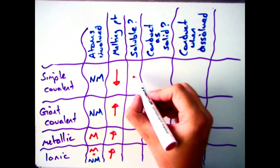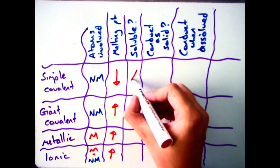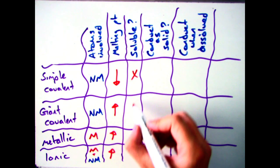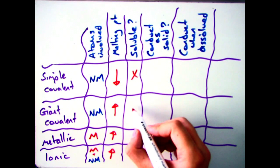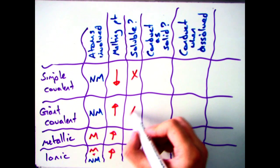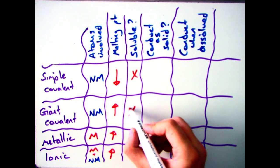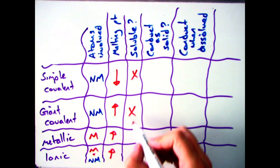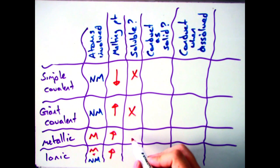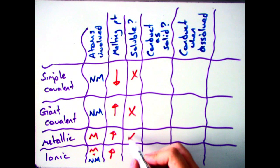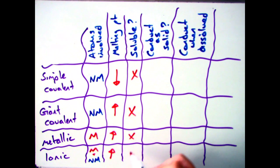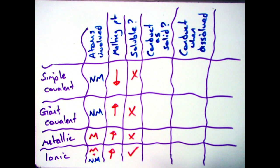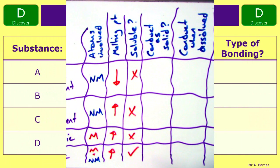If we focus on solubility, the key thing to remember is that most simple covalent compounds are insoluble, giant covalent and metallic are all insoluble, and ionic compounds — while there are some specific solubility rules — the general rule is that most of them are soluble.